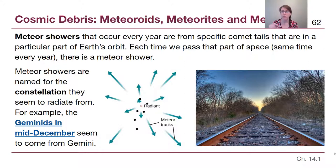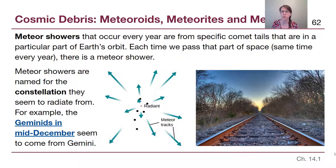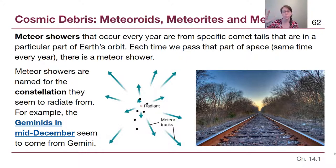The name of the meteor shower comes from the constellation where that central point appears to be. For example, the Geminids in mid-December — linked to a video in our YouTube playlist — seem to come from the constellation Gemini, and that video shows images of the meteor shower against a labeled background sky.